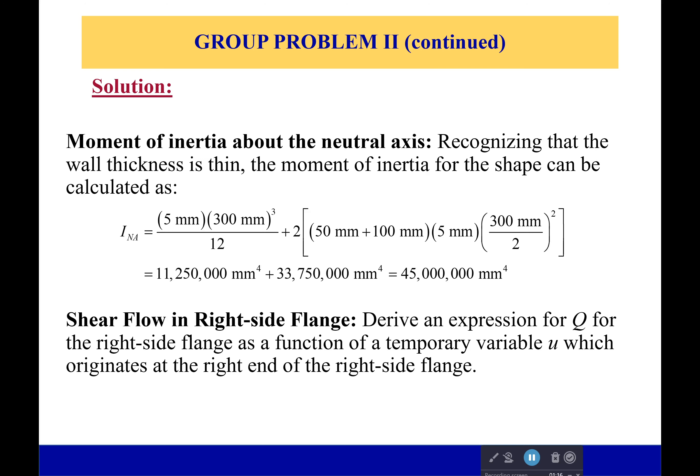So now we're going to try to figure out the shear flow in our right side flange. So this is going to be for, you know, looking at our little picture right here. It'll be right here. And we've got a temporary variable u. Okay, a temporary variable u. So the area is going to be 5 millimeters times u, and the distance to centroid, from centroid to centroid is going to be 150 millimeters, from here to here.